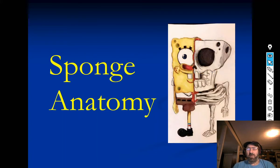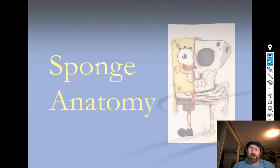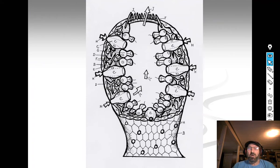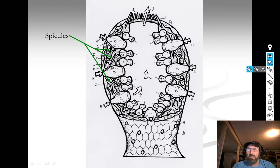Now let's get into sponge anatomy. Here is a stereotypical sponge with the body wall and an internal cavity. In your notes, I'd like you to write down the letter of the structure I give you in the table. Spicules are these needle-like structures, and they are letter F.